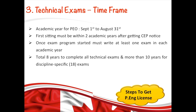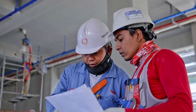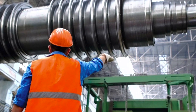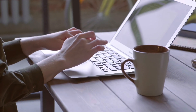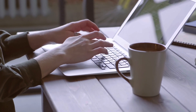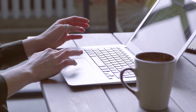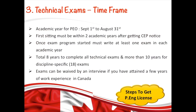Here's a tip: if you are assigned 18 exams under the discipline-specific exam program, you still have an option to get exempted. Once you get a job in Canada and achieve four to five years of experience as an engineer, you can write a letter to PEO stating your Canadian work experience and request to prove your technical skills through an interview instead of writing those 18 exams. They have made exceptions in the past and exams have been waived via interview.